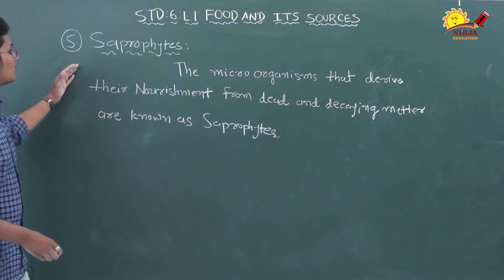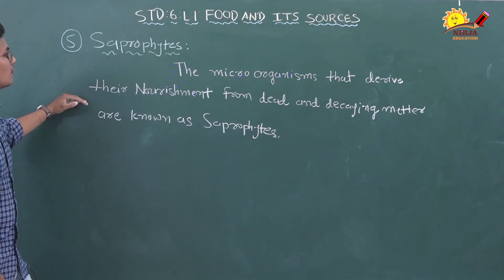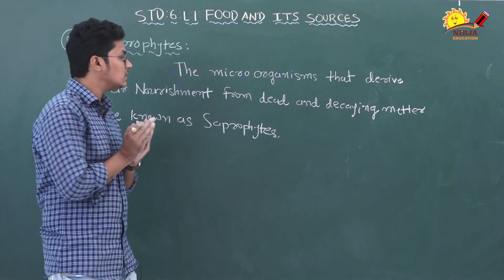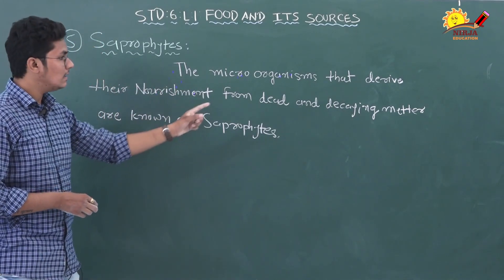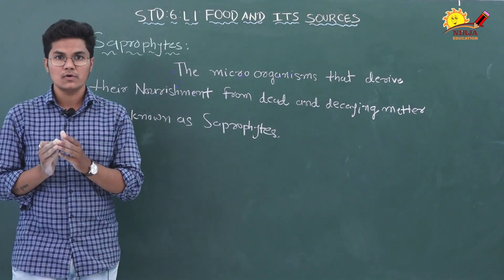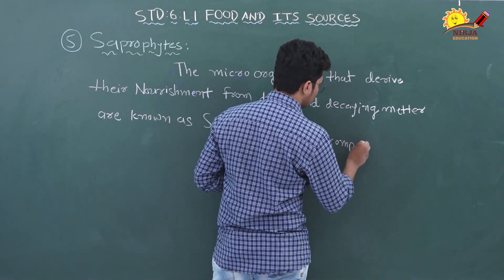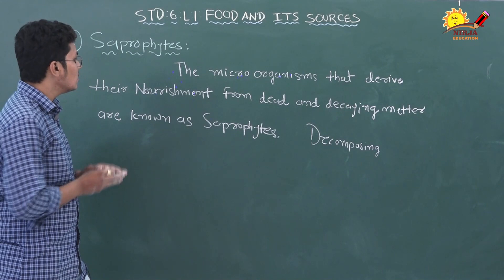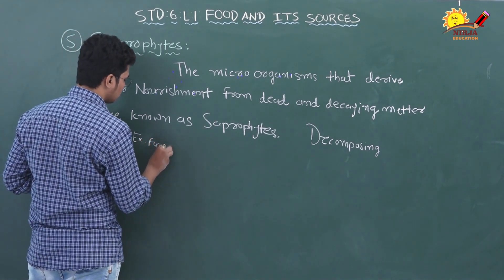The fifth category is saprophytes. Microorganisms that derive their nourishment from dead and decaying matter are known as saprophytes. We call them microorganisms because we cannot see them with the bare eye — we need a microscope to see them. These microorganisms convert dead matter into soil, and this process is known as decomposing. Examples are fungi and bacteria.